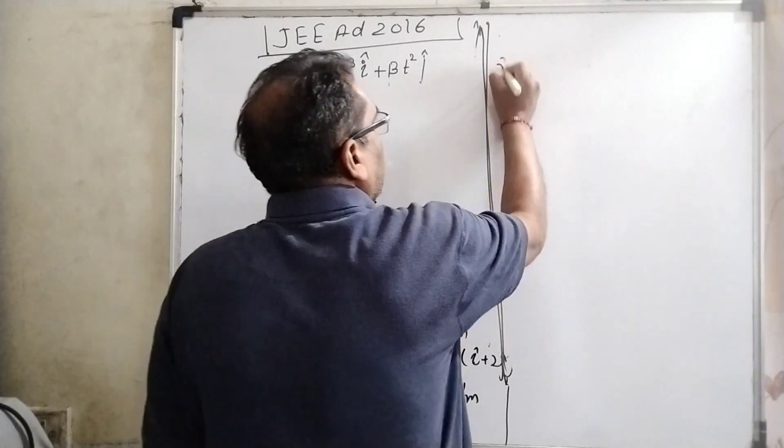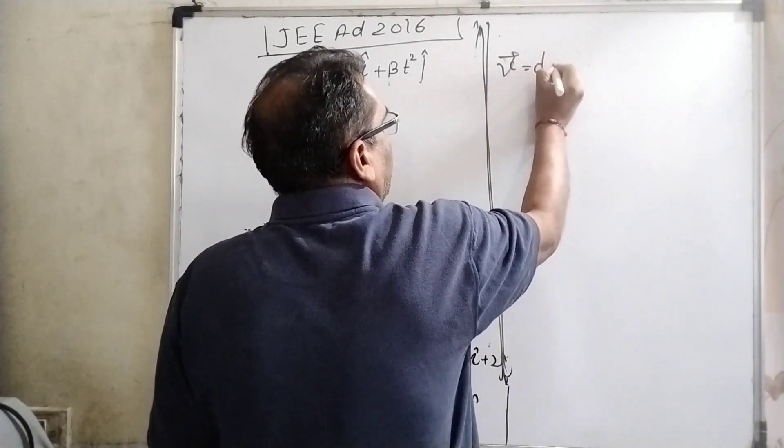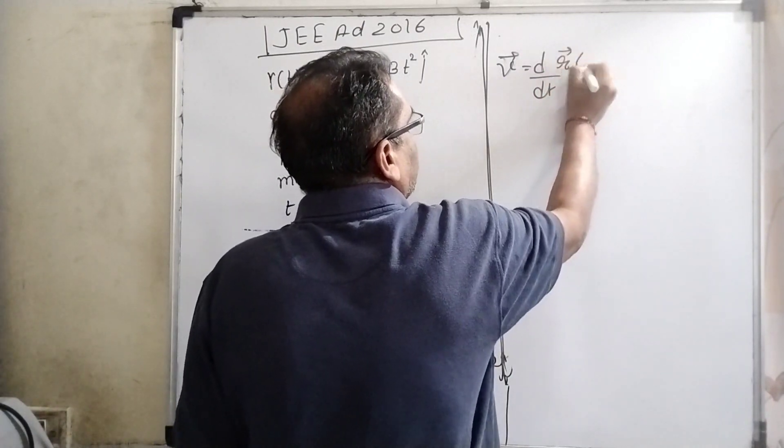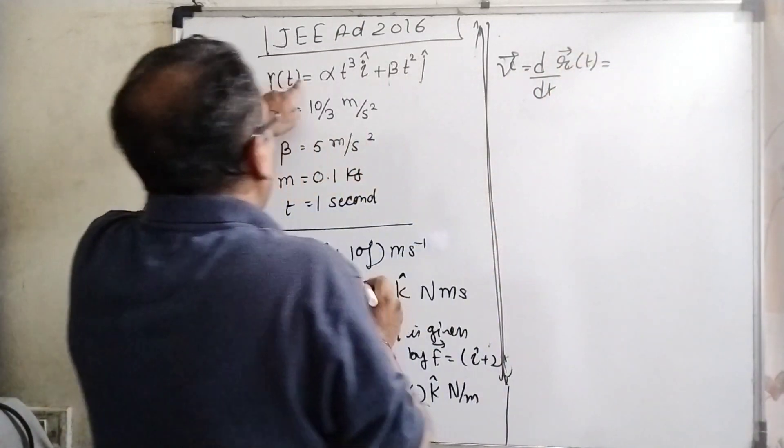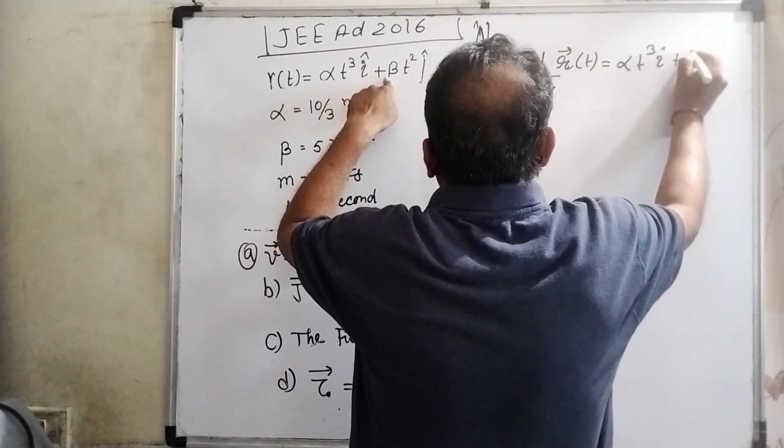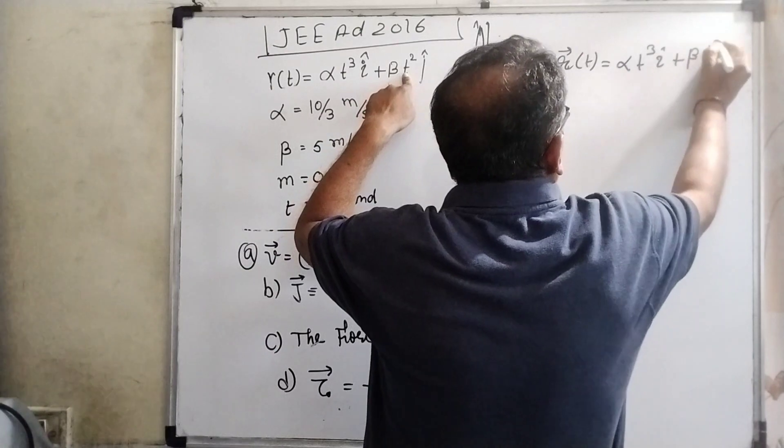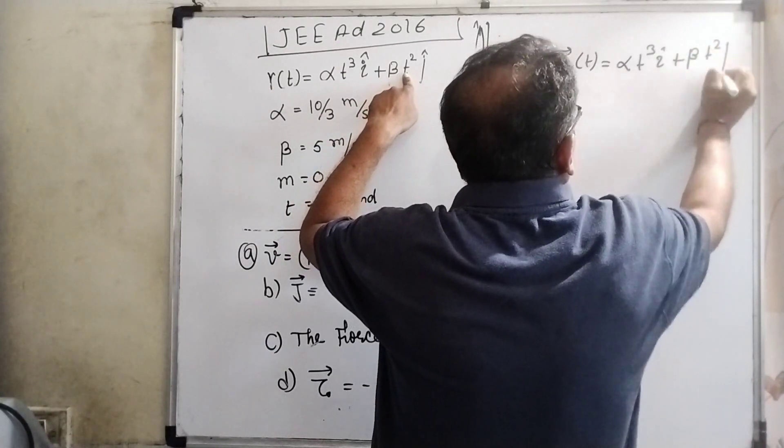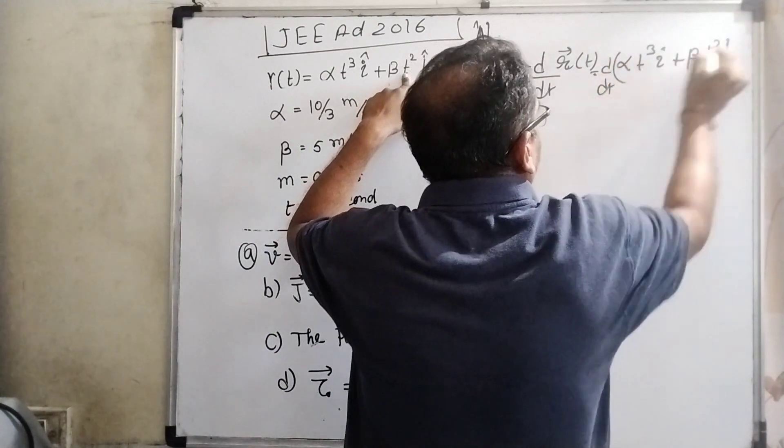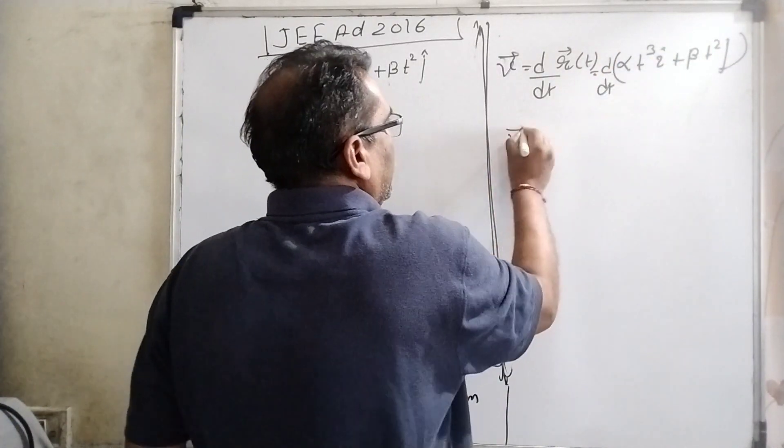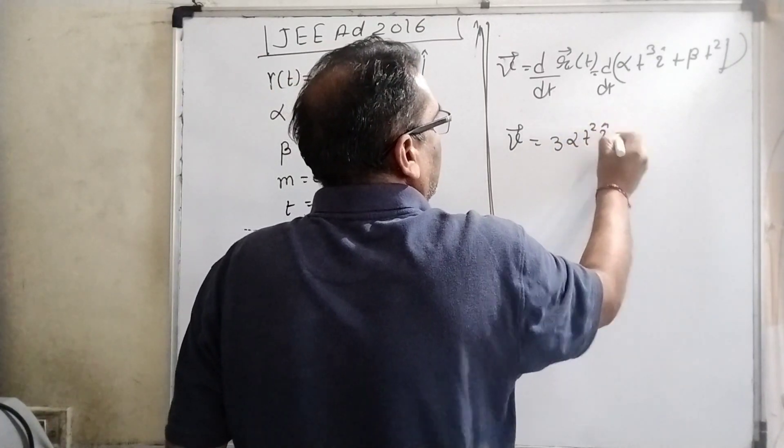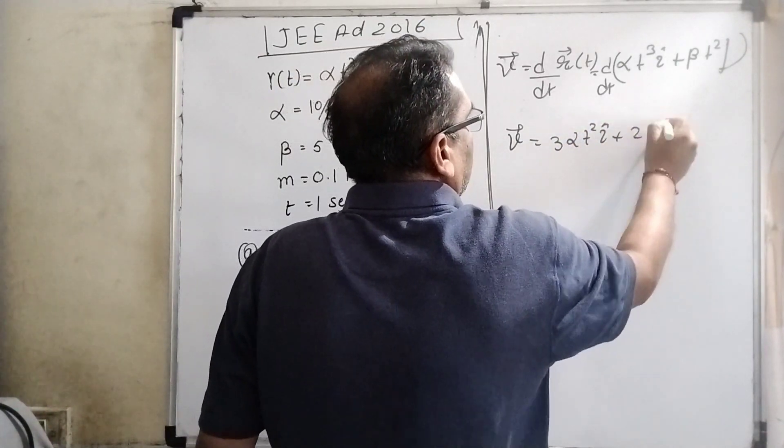What is velocity? Differentiation with respect to t of position vector r as a function of t. What is r(t)? α t³ i plus β t² j. Differentiate with respect to t and you will get 3α t² i plus 2β t j. This is velocity.